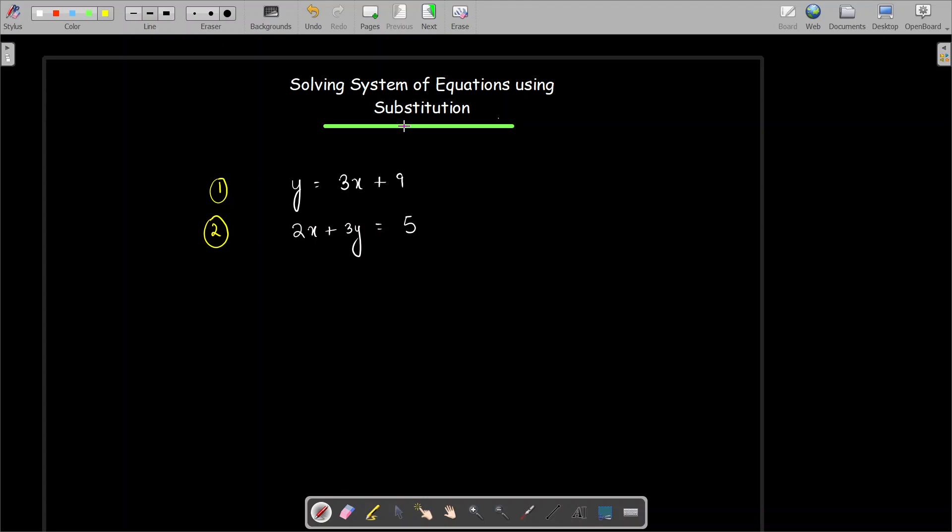We will try to find out that solution or solutions. The first method is using substitution. The substitution method works the best if one of the equations has a variable alone on one side. For example, here I see this Y is a lonely variable because on the left hand side of the equation we don't have anything else except Y.